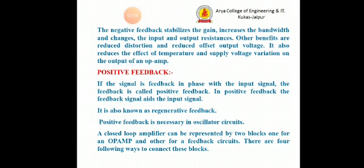A closed loop amplifier can be represented by two blocks: one for an op-amp and other for a feedback circuit. There are four following ways to connect these blocks: voltage series, voltage shunt, current series, and current shunt. But in the case of op-amp, what matters is the voltage series feedback and the voltage shunt feedback. These are quite important, so we are going to discuss about these particular circuits.